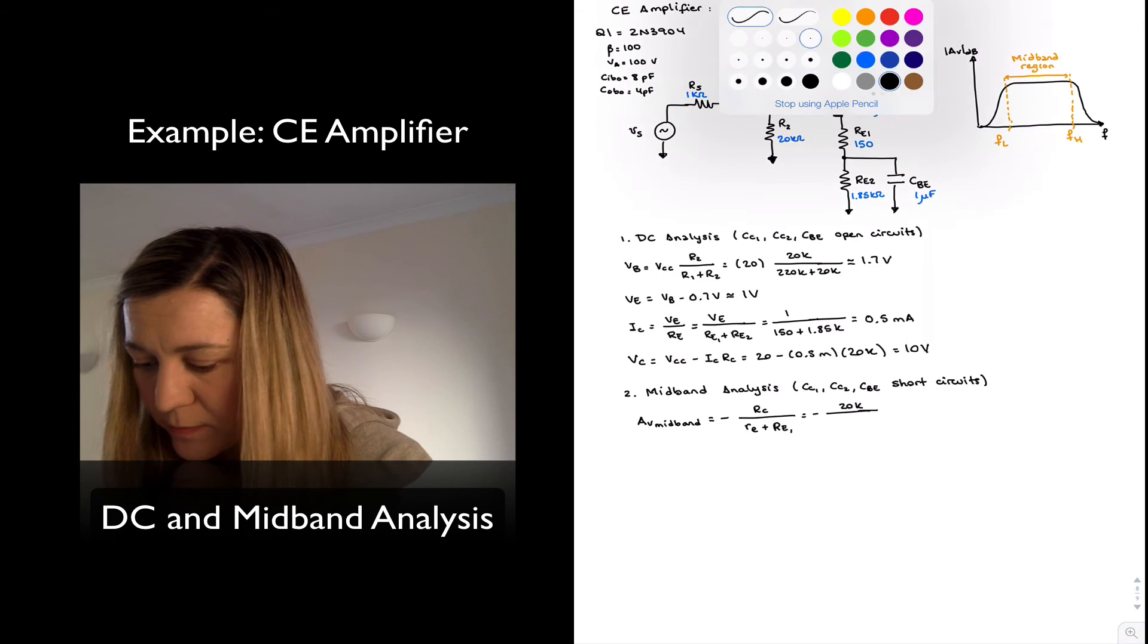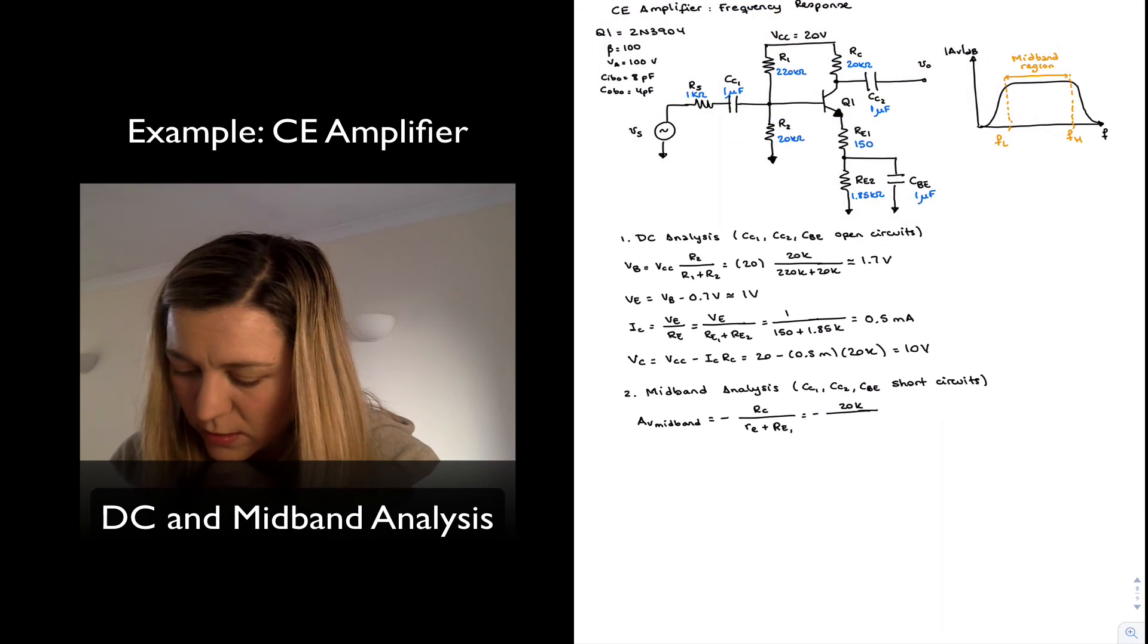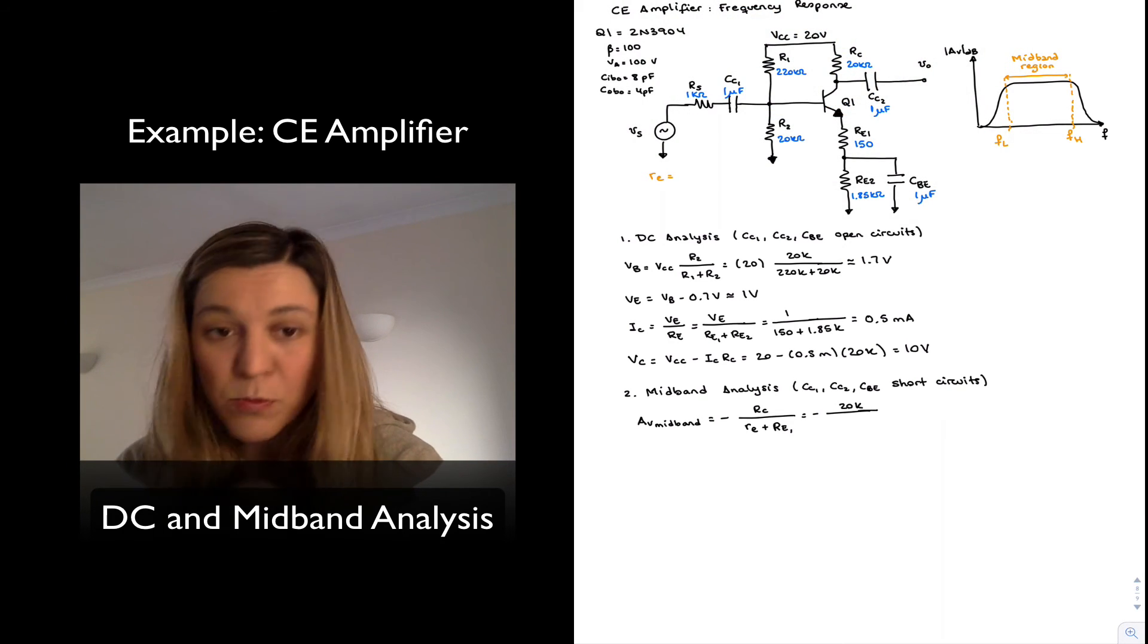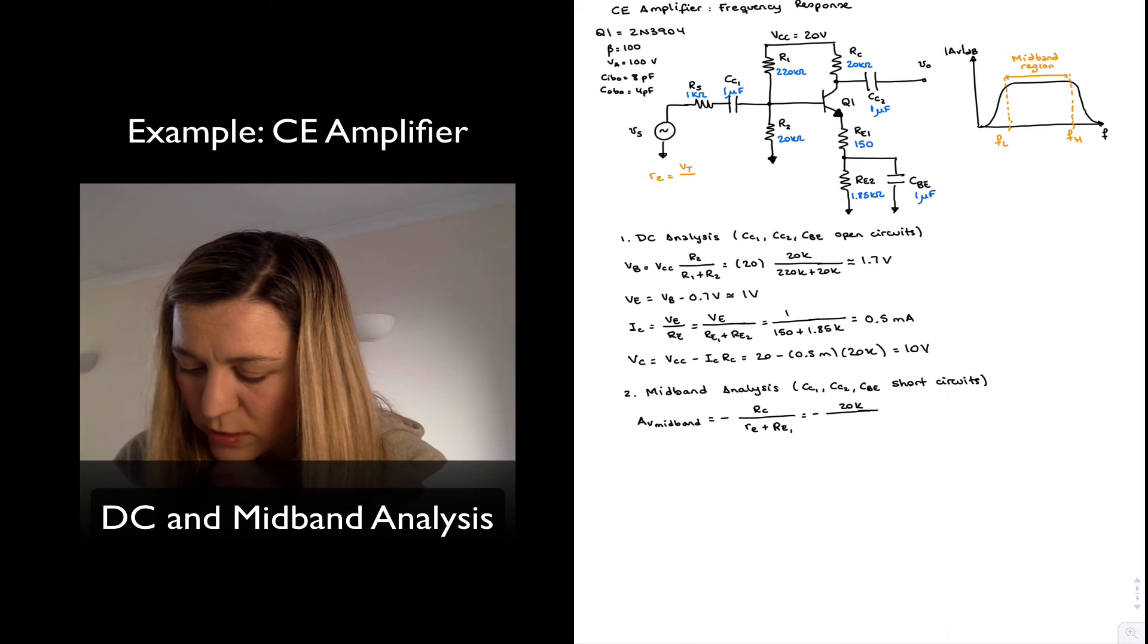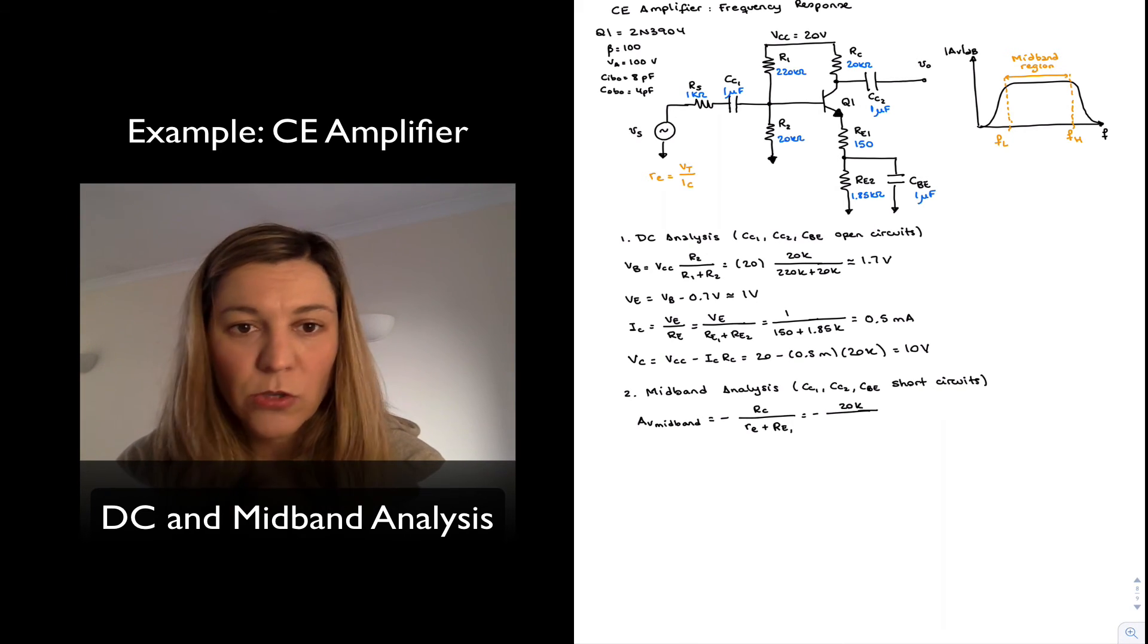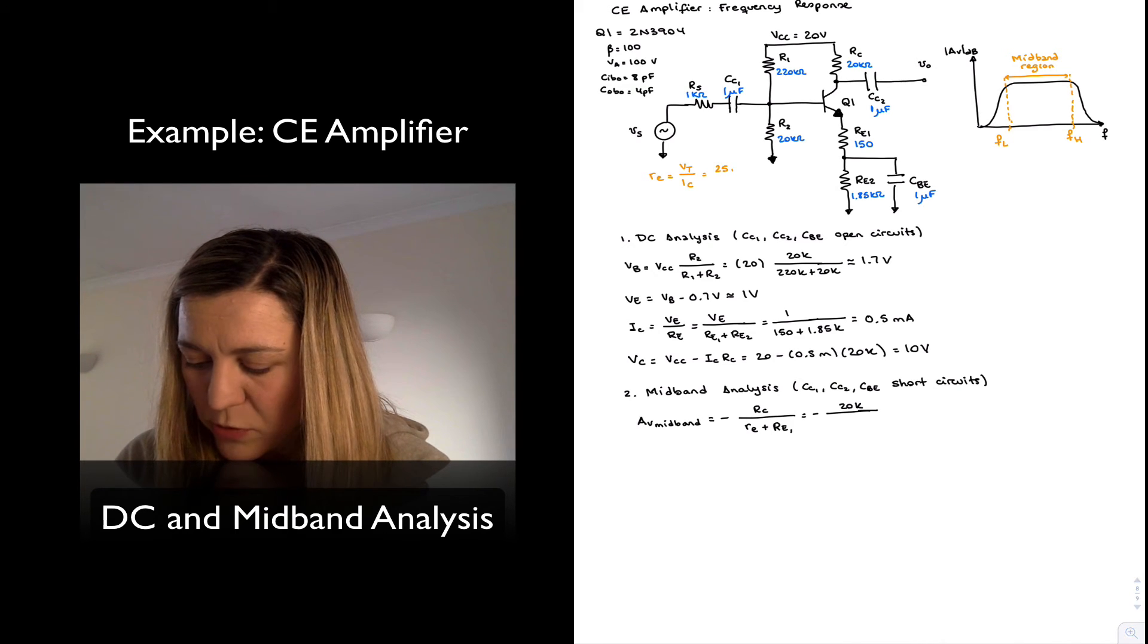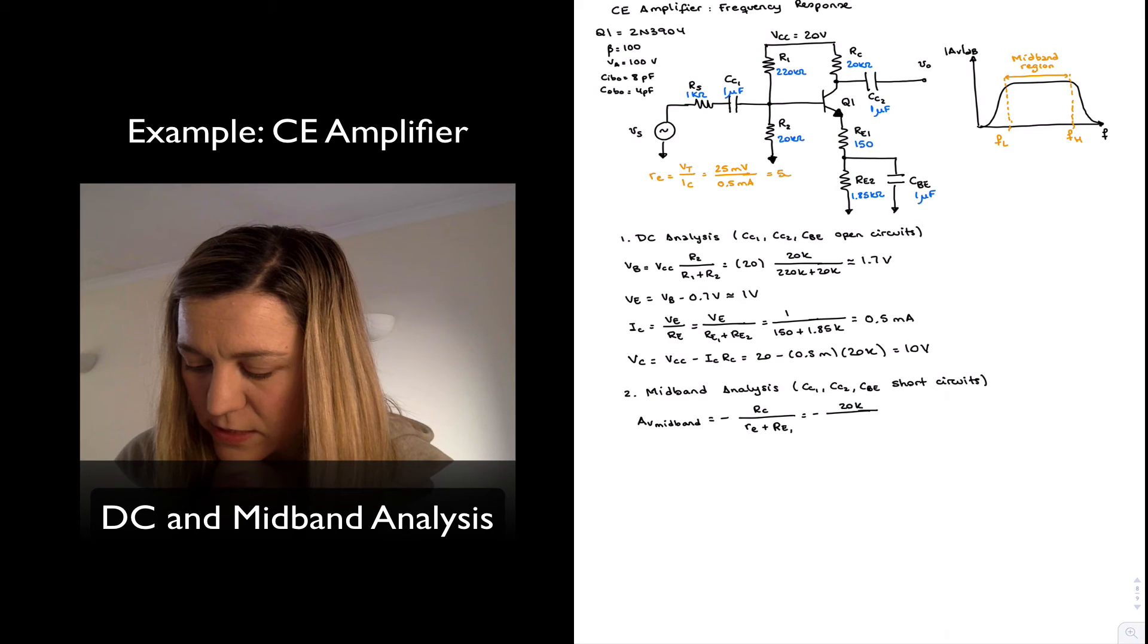This is minus 20K divided by, now I have to calculate little re. It's one of the small signal parameters, and little re is equal to the thermal voltage divided by the quiescent collector current. Thermal voltage, assuming room temperature, around 25 millivolts, and IC, I have calculated to be 0.5 milliamps, so little re is just 50 ohms.